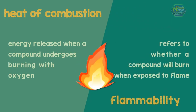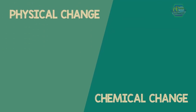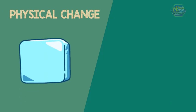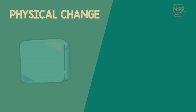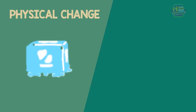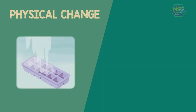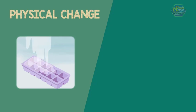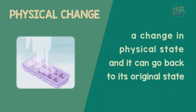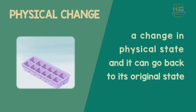A substance can also undergo physical or chemical change. For example, when ice is exposed to room temperature, it will become liquid, but when you put it back in the freezer, it will go back to ice. This is an example of physical change. In simple terms, it is just a change in physical state and it can go back to its original state.